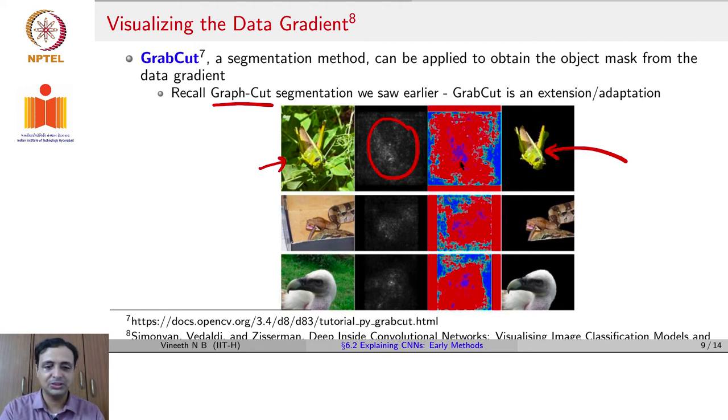Here are a couple of more examples. You see especially the third row, a bit more clearer. You can see here that you have a bird, its data gradient, then you use grab cut to segment out that object from the background, and you get a nice mask of the object, which you can use for other purposes. For details of grab cut, please see this link below. And that is also an exercise for you in this lecture to see how grab cut can be used with the data gradient to obtain these kinds of masks.